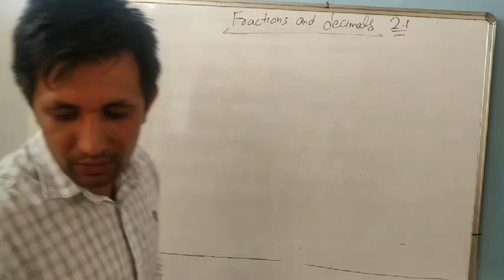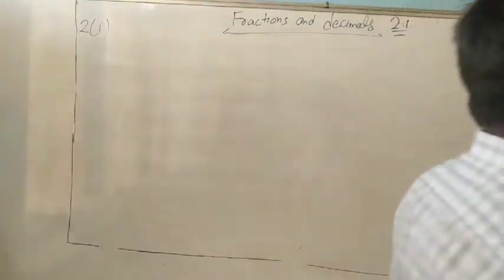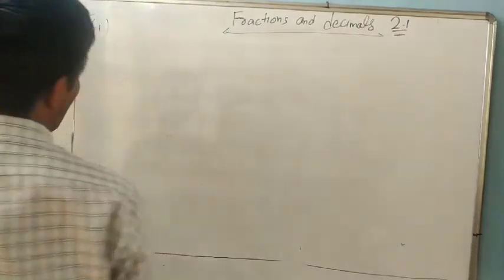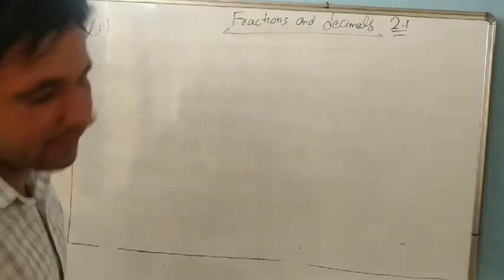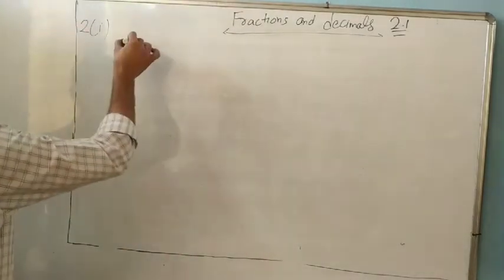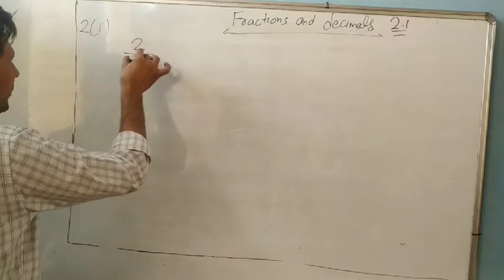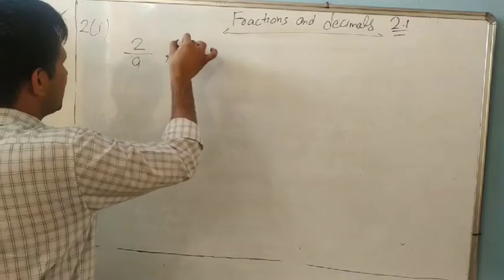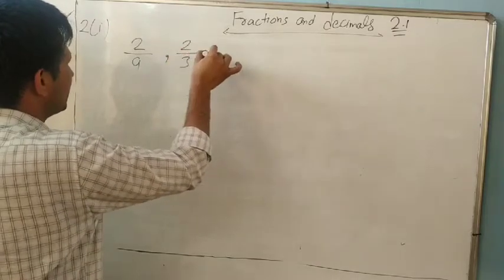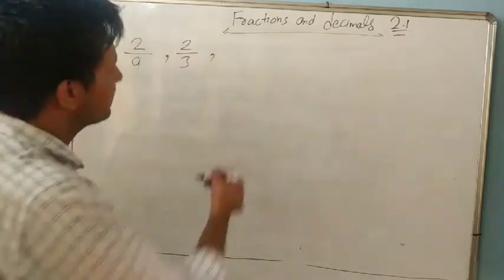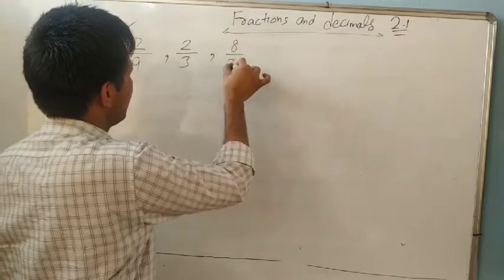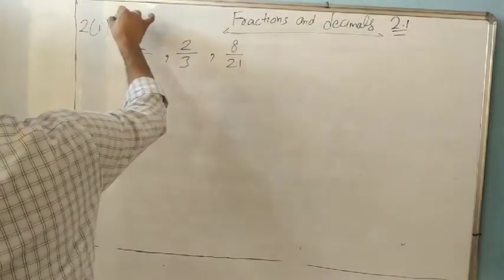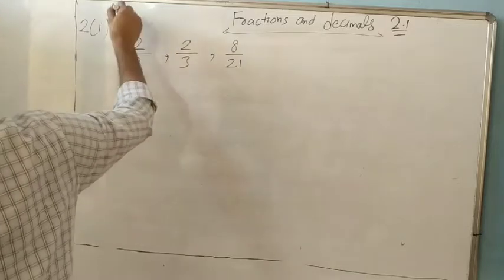Now question number 2: Arrange the following fractions in descending order. Part one: 2/9, 2/3, and 8/21. We need to arrange these in descending order.